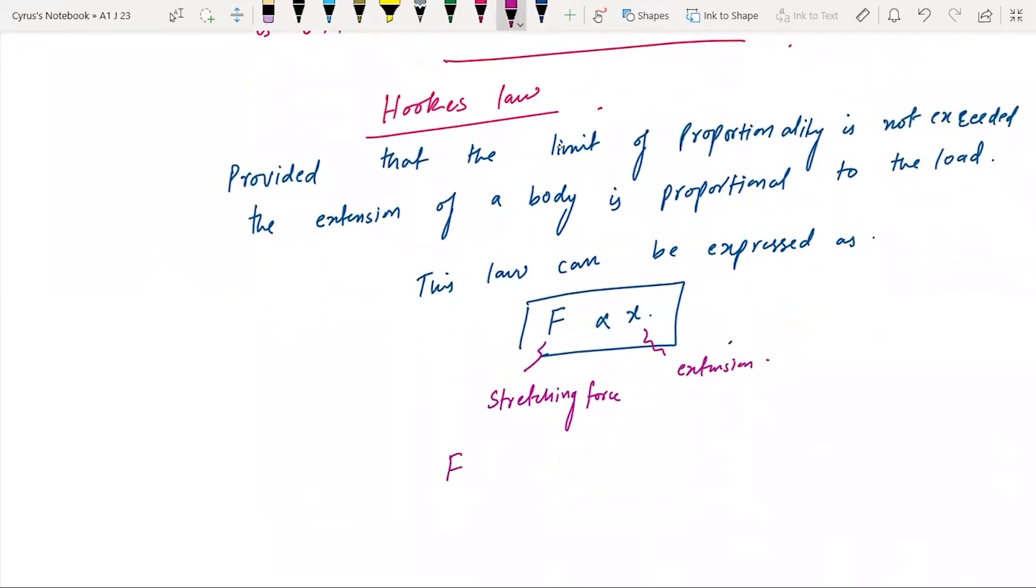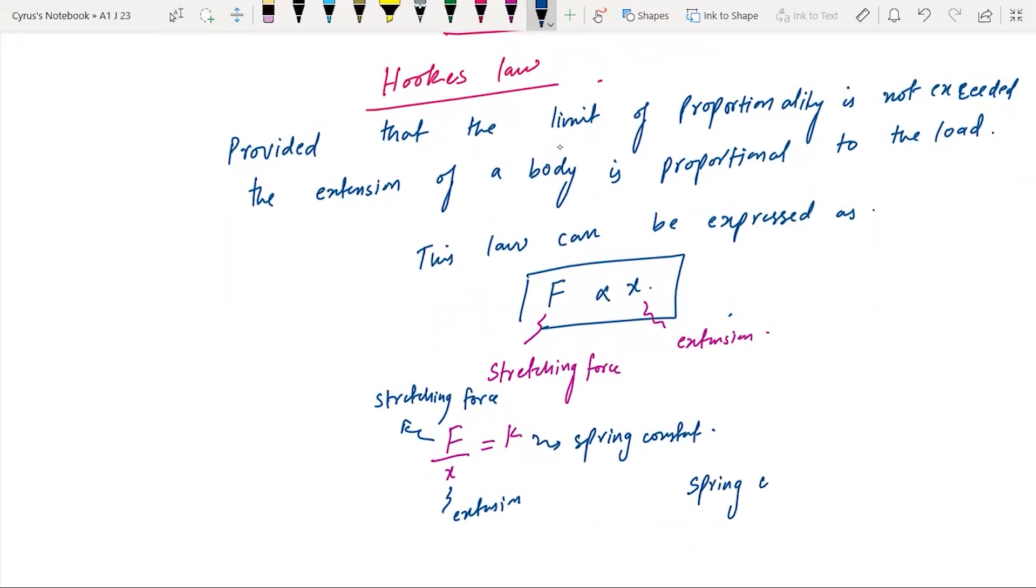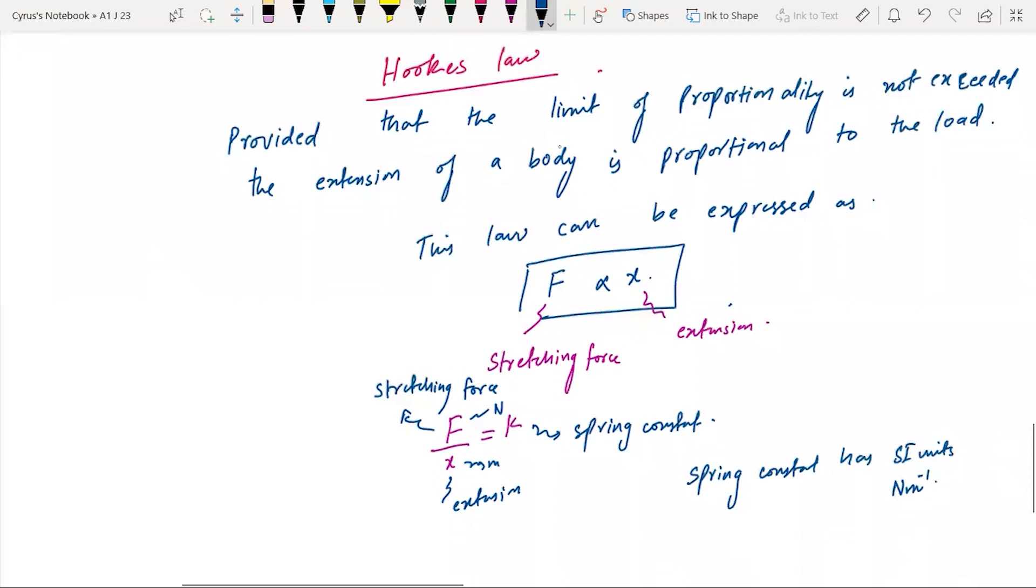This gives us F over x equals constant k. F is the stretching force, x is the extension. K is the spring constant. The spring constant has SI units Newton per meter, because this is in Newtons and this is in meters, so we get Newton per meter.